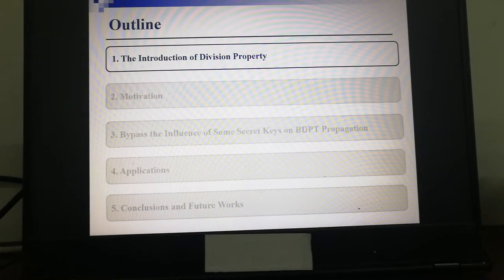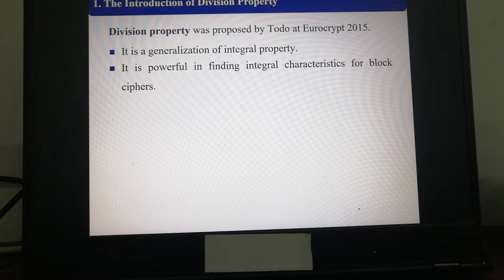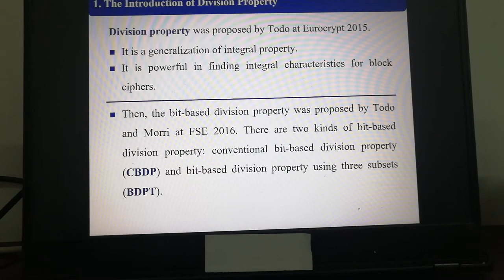The first part, the introduction of division property. Division property was proposed by Todo at Eurocrypt 2015. It's a generalization of integral property. It's powerful in finding integral characteristics for block ciphers. Then, the bit-based division property was proposed by Todo and Morii at FSE 2016. There are two kinds of bit-based division property: conventional bit-based division property, denoted as CBDP, and bit-based division property using three subsets, denoted as BDPT.